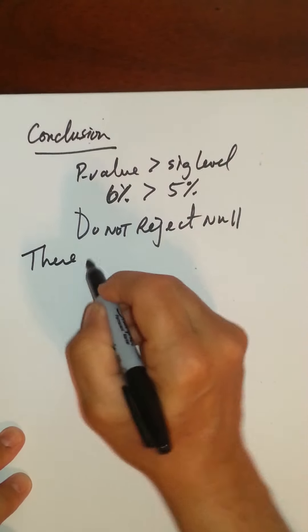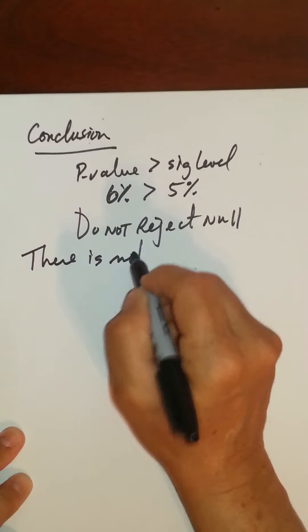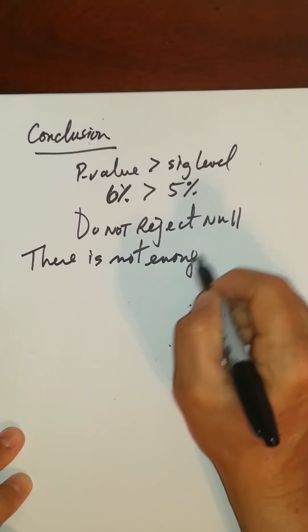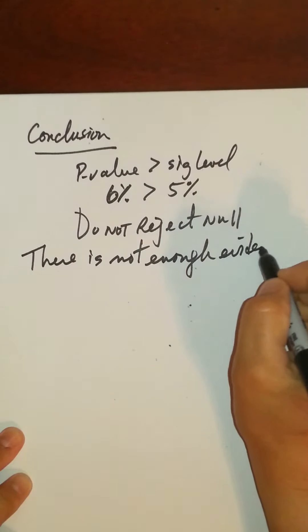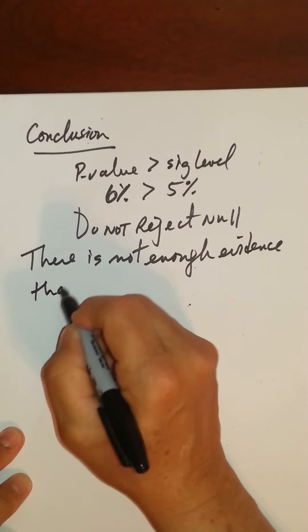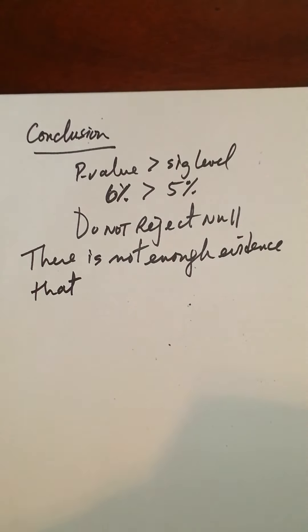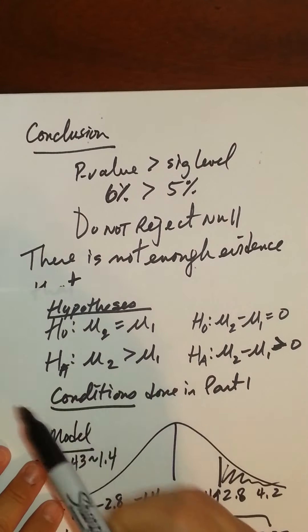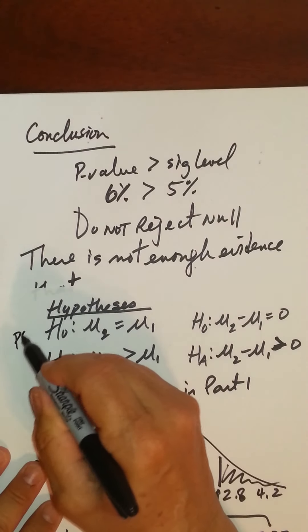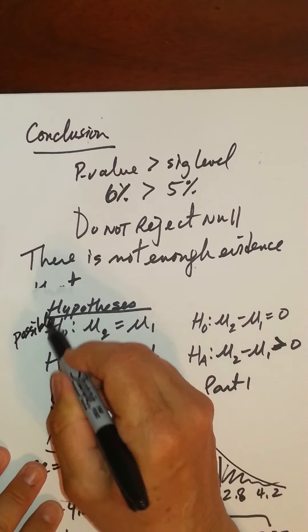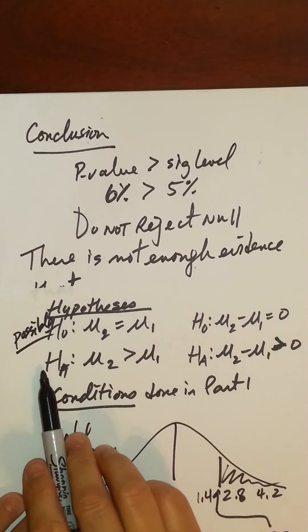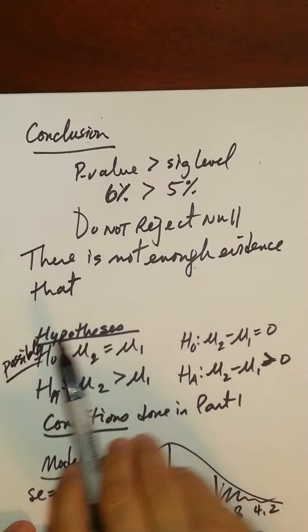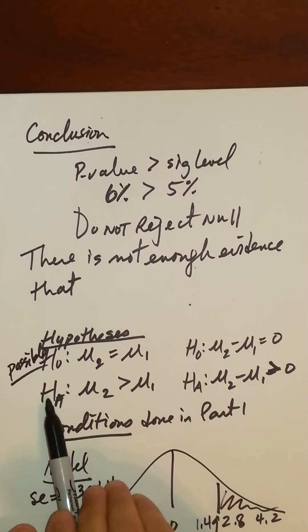And therefore, there is not enough evidence that, let's go back to our hypotheses here. So remember, if I'm not rejecting the null, I'm saying this is possible, that the null is possible, so if the null is possible, then the alternative is not likely. That's why I'm saying there's not enough evidence that the alternative is true.